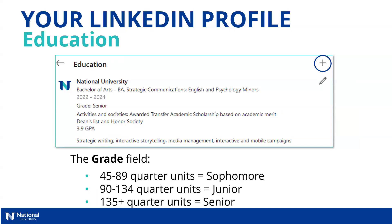Key skills may also be included in the education section. For example, you might list things like strategic writing, interactive storytelling, media management, and interactive and mobile campaigns — highlighting key pieces of knowledge you've gained from your degree. It's not necessarily course names or specific classes you took, but the key knowledge bases you've developed can be beneficial to talk about. Make sure you also list all of your degrees — associate degrees, bachelor's degrees, graduate degrees — so viewers can see the full picture of your educational background.